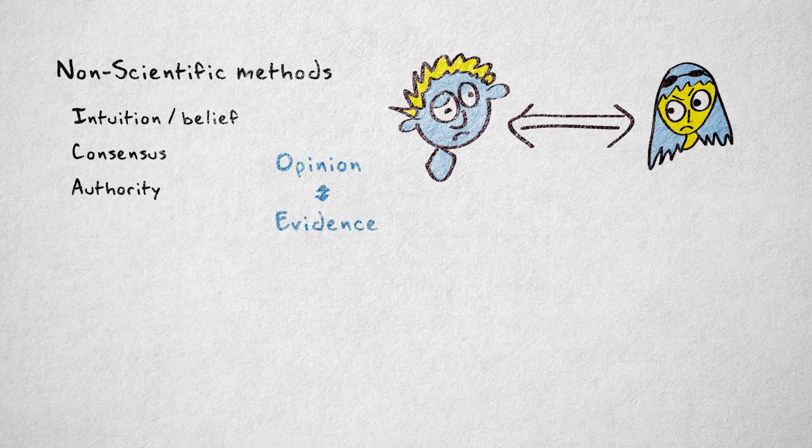What we need is evidence. So how do we use evidence to settle the argument of who Misha loves more?